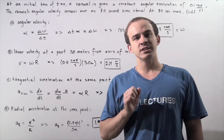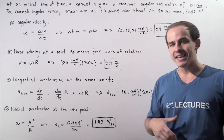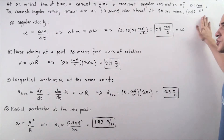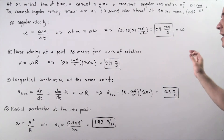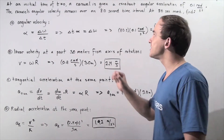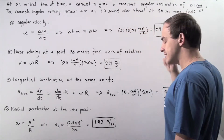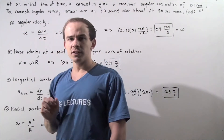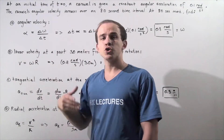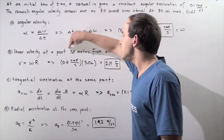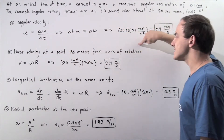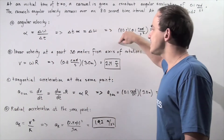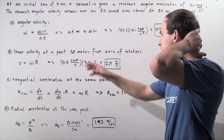At an initial time of t=0 seconds, a carousel is given a constant angular acceleration of 0.1 radians per second squared. Initially, the carousel's angular velocity is 0, but it increases over a time interval of 8 seconds. At the 8-second mark, we want to calculate four things: a) the angular velocity, b) the linear or translational velocity of an object found at 3 meters from the axis of rotation, c) the tangential acceleration, and d) the radial acceleration at the same point as in part b.